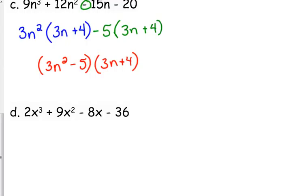Last one. 2x cubed plus 9x squared minus 8x minus 36. Now, for this one, 2 and 9 don't have a common factor, right? Well, that's okay. Your coefficients don't always have to have a common factor. We are going to take out an x squared. We're left with 2x plus 9. What is our GCF between 8 and 36? We're going to take out a negative and 4. When we take that out, we're left with 2x plus 9.